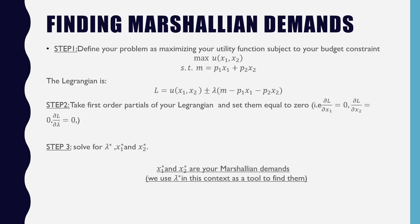Finding Marshallian Demand is a three-step process. Step one: define your problem as maximizing your utility function subject to your budget constraint. Step two: take the first-order partials of your Lagrangian and set them equal to zero. Step three: solve for lambda star, x1 star, and x2 star. x1 star and x2 star are your Marshallian Demands. We use lambda in this context just to help find those values of x1 star and x2 star.